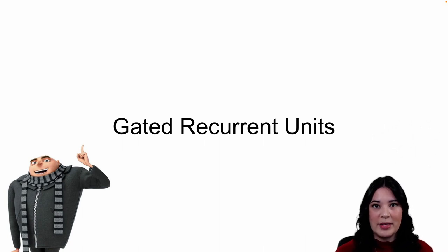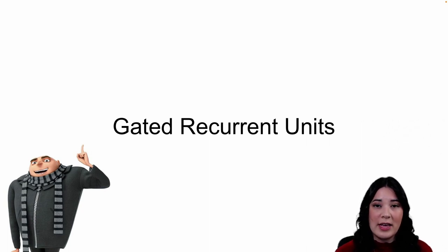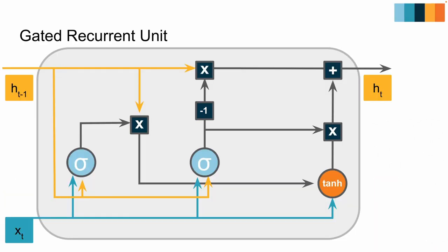While the LSTM gets around some of the vanishing gradient problem through the cell state, it does have a lot of operations and parameters to learn. Thus, people have proposed gated recurrent units, or GRUs, as an alternative to the LSTM architecture. GRUs are still recurrent neural networks but they're a bit simpler. One thing you might notice is that we no longer have a cell state — instead, we only have a hidden state and actual inputs, much like a simple recurrent cell. Unlike an LSTM which had three gates — the forget gate, input gate, and output gate — a GRU only has two: an update gate and a reset gate.